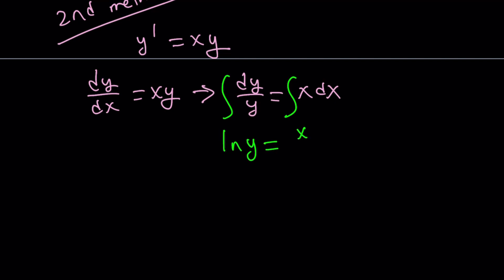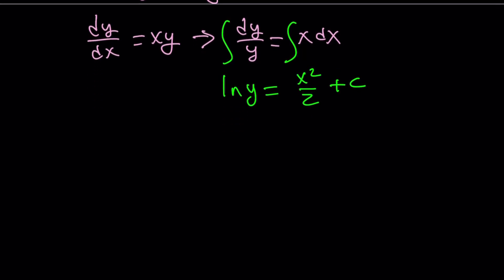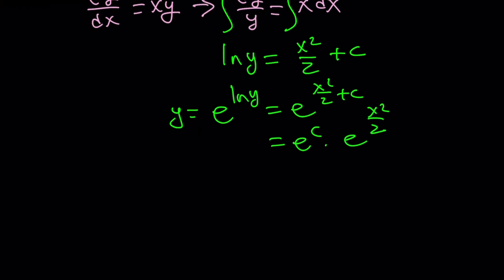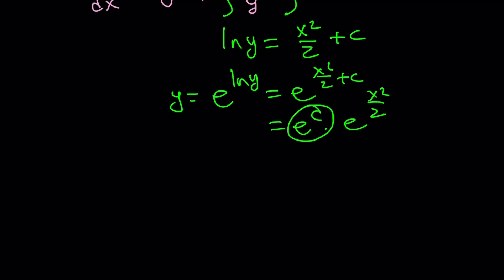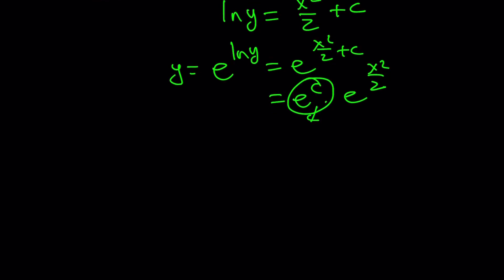And then, I'm going to do the y equals e to the power ln y thing again, e to the power x squared over 2 plus c, which is e to the power c times e to the power x squared over 2. And as you know, e to the c is a constant. So, I can call that k. And now, y becomes k times e to the power x squared over 2.